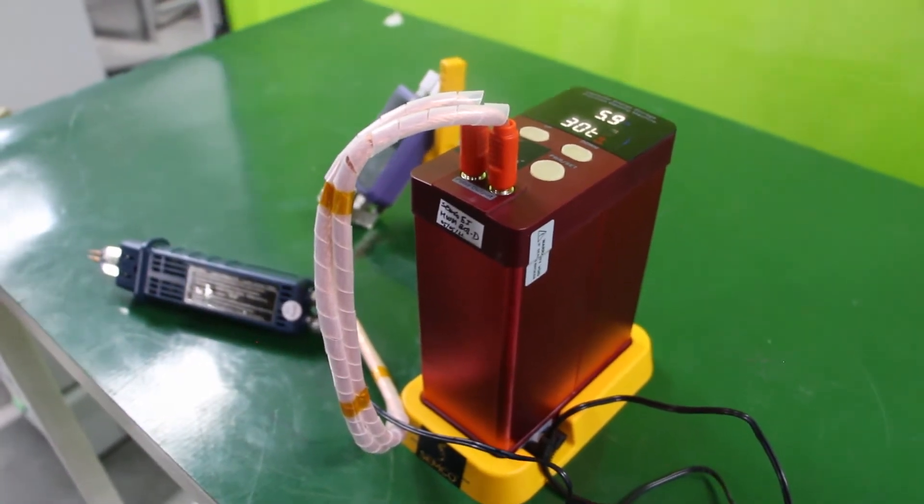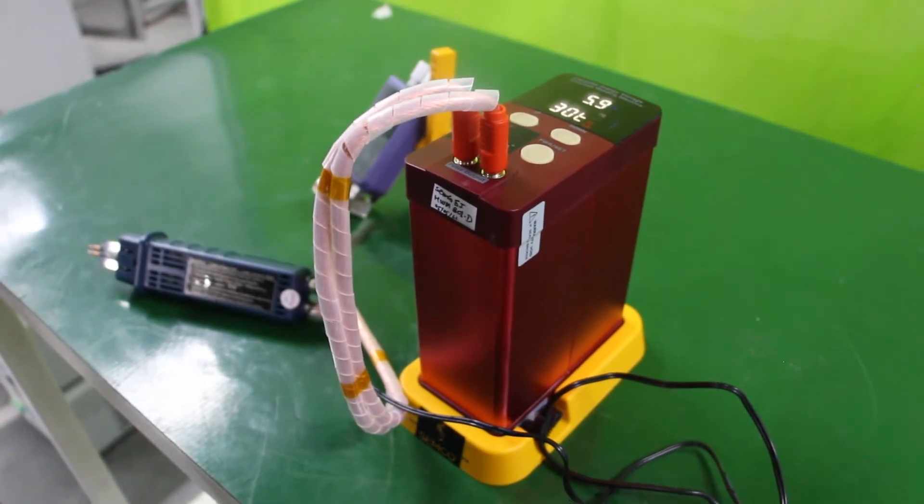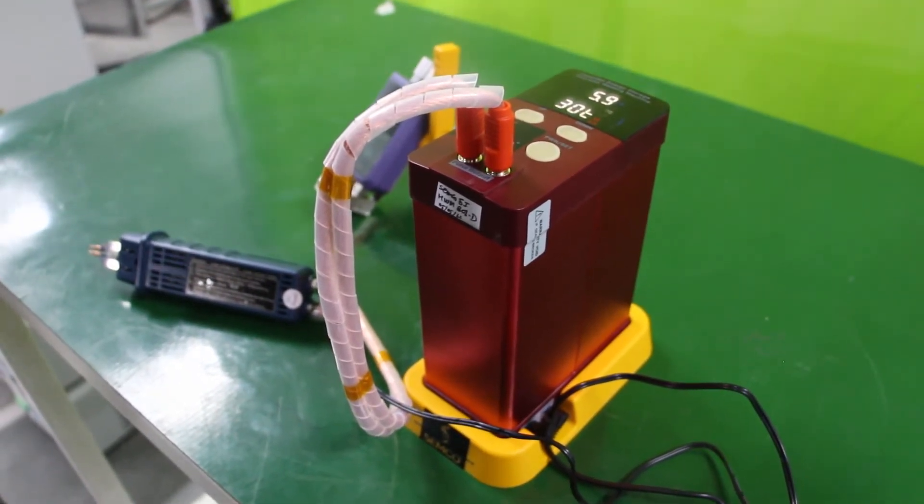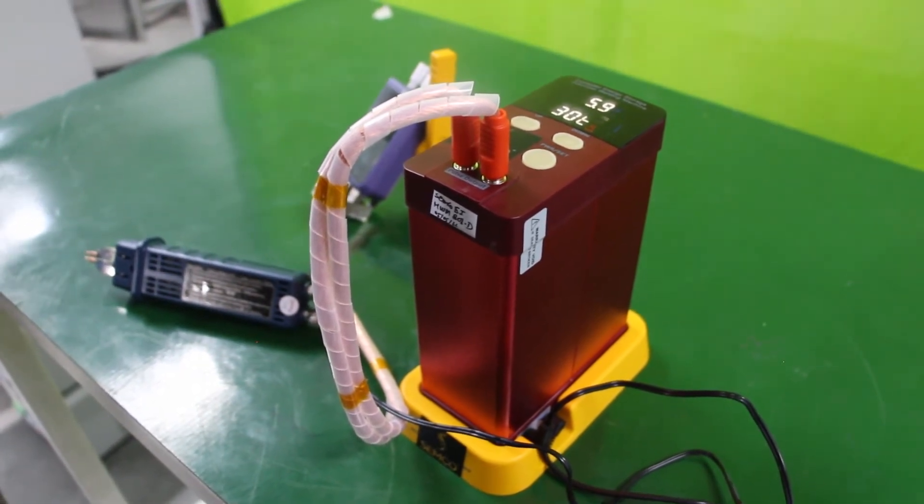This machine has two operation modes: one is automatic welding and second one is foot paddle controlling. The LED screen will display the instantaneous current value during welding work.